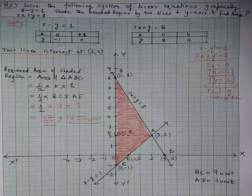To find the point of intersection algebraically, we can solve the two equations by the elimination method. Adding x − y = 1 and 2x + y = 8, the −y and +y cancel, giving 3x = 9, so x = 3. Substituting x = 3 into either equation gives y = 2. So (3, 2) is confirmed as the point of intersection by the elimination method.